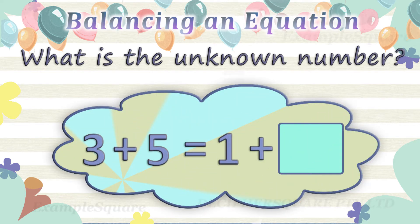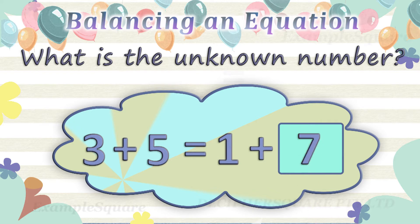In this equation, the left side is 3 plus 5 and the right side is 1 plus an unknown number. 3 plus 5 on the left side equals 8. For this equation to balance correctly, the right side should also be equal to 8. The right side is 1 plus an unknown number. 1 plus 7 equals 8, so the unknown number here is 7.